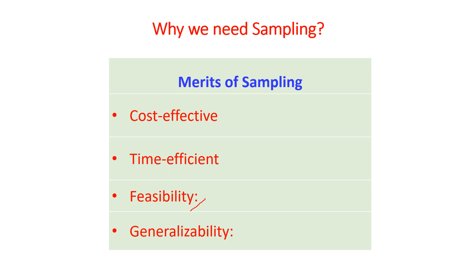Another advantage is feasibility. Sometimes it is not possible or it is very challenging to conduct a census or to consider the entire population, as some data may not be accessible. In that case we have to take a sample which is feasible and practicable. Another advantage is generalizability: if the sampling design is proper and well-designed, it is possible to generalize about the population from the findings of the sample with at least some degree of accuracy.